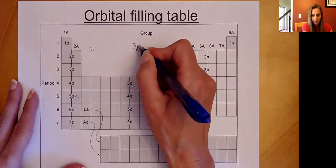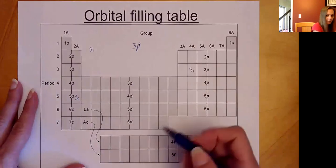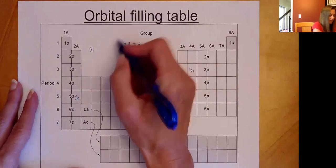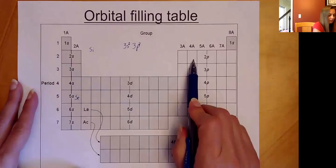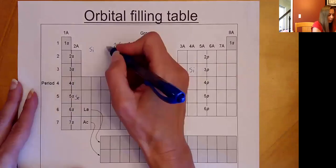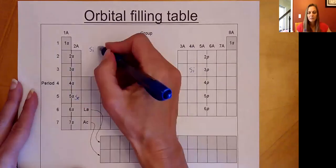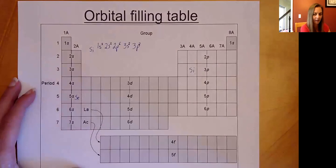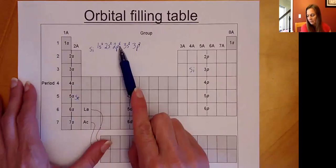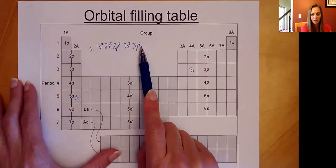Working backwards from 3p²: before 3p is 3s, which holds 2. Before 3s is 2p, which holds 6. Before 2p is 2s, which holds 2. And before 2s is 1s, which holds 2. We can double-check by adding up the total electrons: 2, 4, 10, 12, and 14. Silicon is element number 14, so we've done it correctly. Silicon's configuration is 1s² 2s² 2p⁶ 3s² 3p².